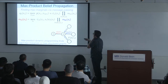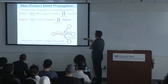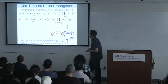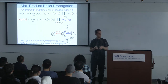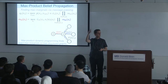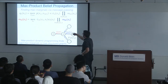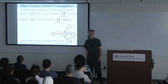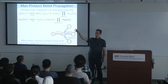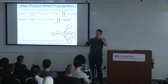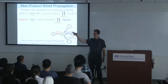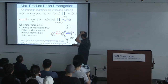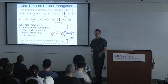Using message passing on trees, we can compute what's called a max marginal. A normal marginal integrates or sums over all variables; a max marginal pins one variable to a value and maximizes over all others. For example: what's the probability of the best configuration of all limbs consistent with the head being at a particular location? We're interested in max marginals because they directly encode the global MAP, and they also give us secondary modes — letting us pick off multiple hypotheses.